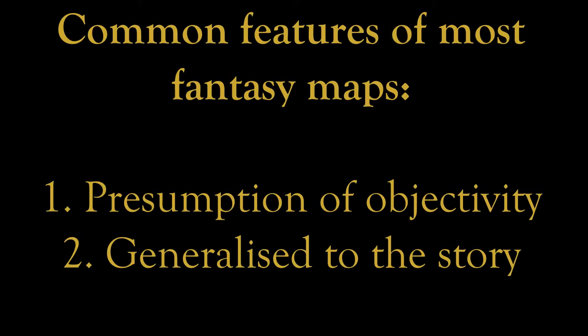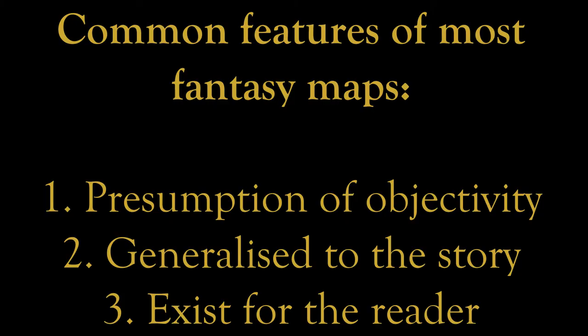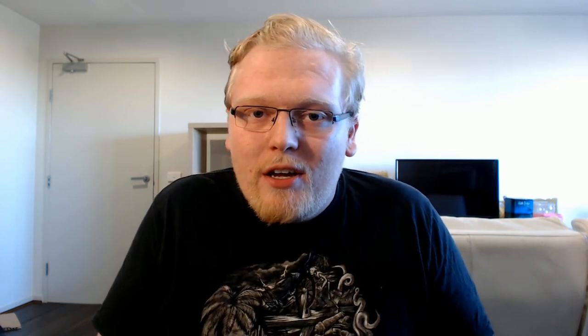So we have maps which are presumed to be objective, but which focus on the events of the story. There's a bit of a contradiction there, but there is an answer to it — a third fact about fantasy maps. Fantasy maps exist for the benefit of the reader. It's very rare to see a fantasy story where the protagonists have access to a map which looks exactly the same as the one in front of the book. And even when they do, they usually won't refer to it very often. The map isn't in the frontispiece so the readers have access to the same information as the protagonists.